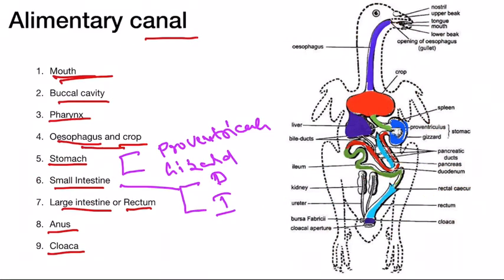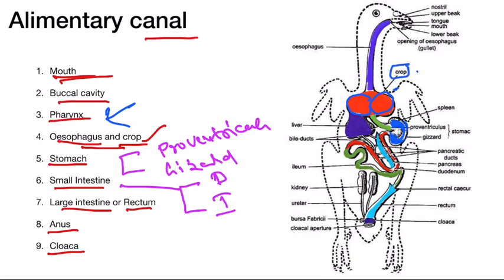The pharynx posteriorly continues as the esophagus. The esophagus runs through the head and neck into the stomach. At the base of the neck, this esophagus forms a bilobed crop structure before it joins the stomach.